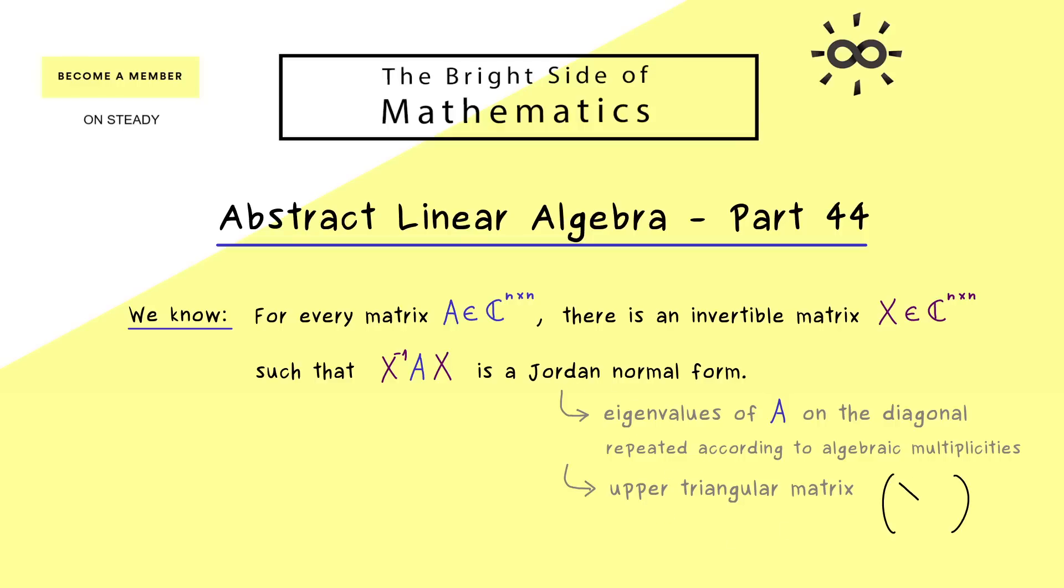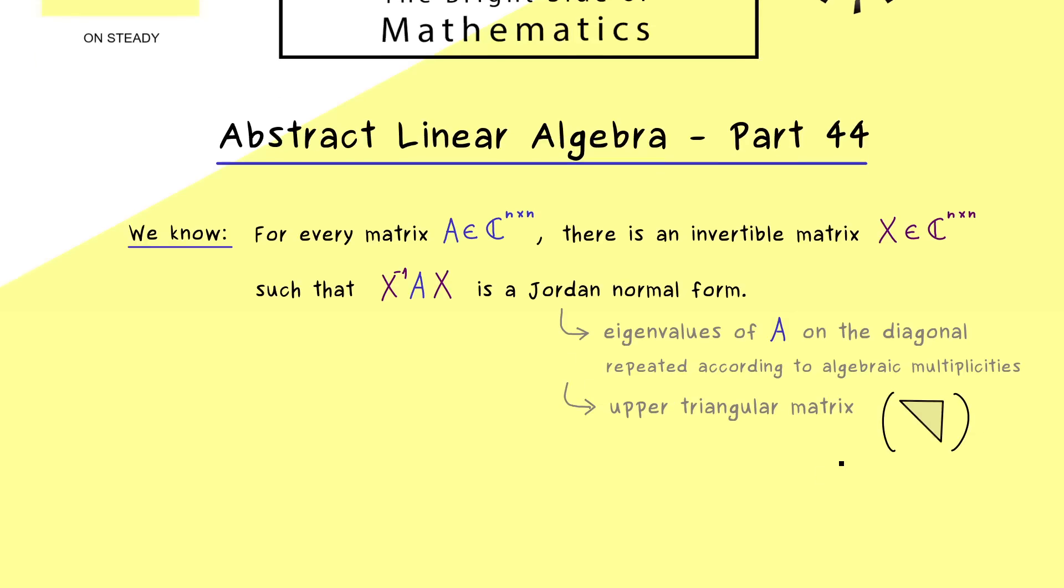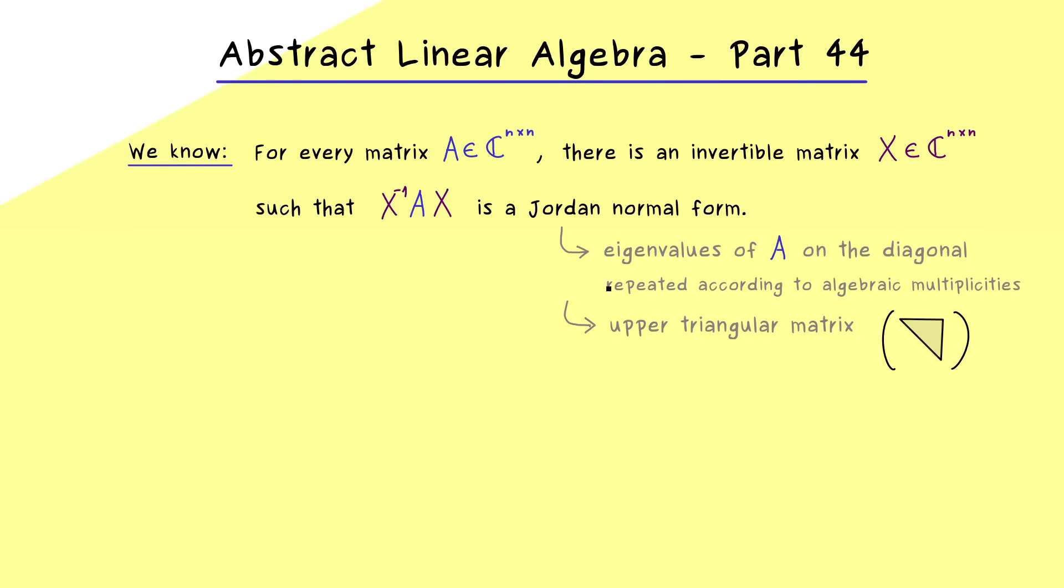Moreover, we also know that the Jordan Normal Form is a special upper triangular matrix. This means there are only non-zero numbers above the diagonal and we also know we don't have many of them. More precisely, we have proven that only the number 1 can exist directly above the diagonal. However, for our next conclusion we don't need these details, because we just need these two pieces of information.